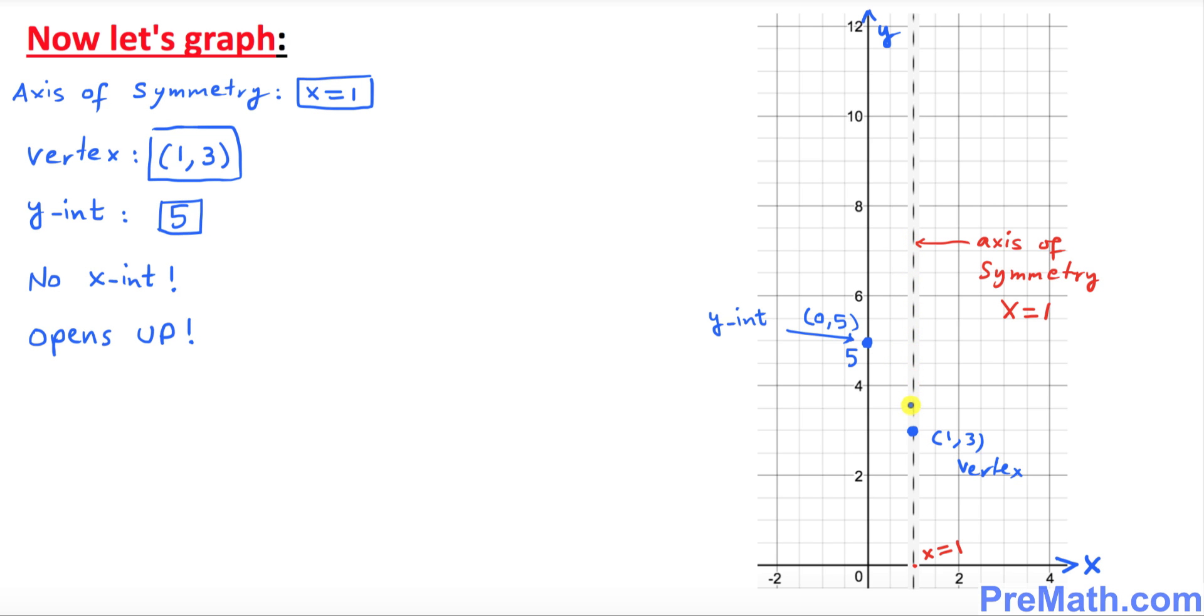Now let me just remind you one thing: this axis of symmetry acts like a mirror. Whatever you see on one side, you're going to see the same thing on the other side as a reflection. If this is the point, you're going to see its reflection on the other side at equal distance.